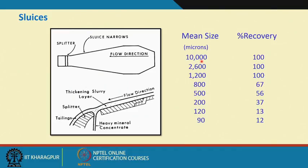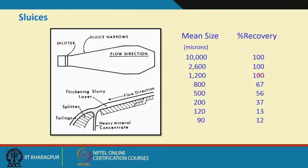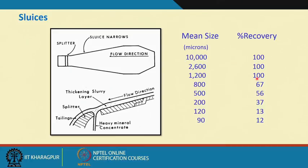If the mean size is 10,000 microns, recovery could be 100 percent; up to 1,200 microns recovery is 100 percent if flow conditions are monitored accurately. At 800 microns it drops to about 67 percent, and at 90 micrometers recovery falls to around 12 percent. So this method is not applicable for very fine size ranges. If we can control the feed flow rate, film thickness, and splitter positioning properly, it works well for relatively coarser size ranges.